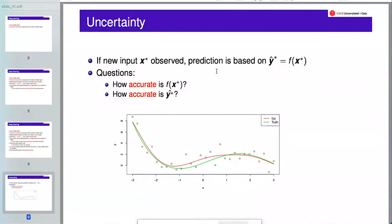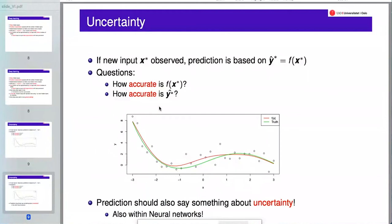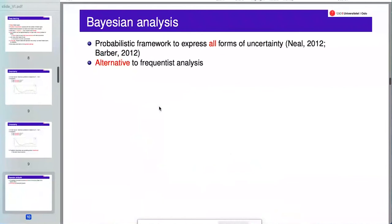How accurate is the prediction based on our estimated function? There are actually two questions: how accurate is f itself, and how accurate is the prediction of y. These can be quite different, and it's not always easy to quantify each source of uncertainty. In many cases you only look at the uncertainty in y given f, ignoring the uncertainty in f itself. But it is important to include all sources of uncertainty when working with neural networks, as in all other types of model-based or machine learning predictions.